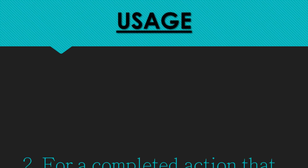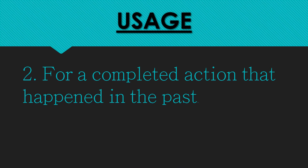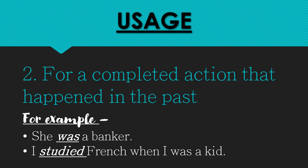Our next condition for using simple past tense is for a completed action that happened in the past — that means the action is already over. For example: 'She was a banker' — the action happened in the past. 'I studied French when I was a kid.' The words 'was' and 'studied' tell you that the action happened in the past.